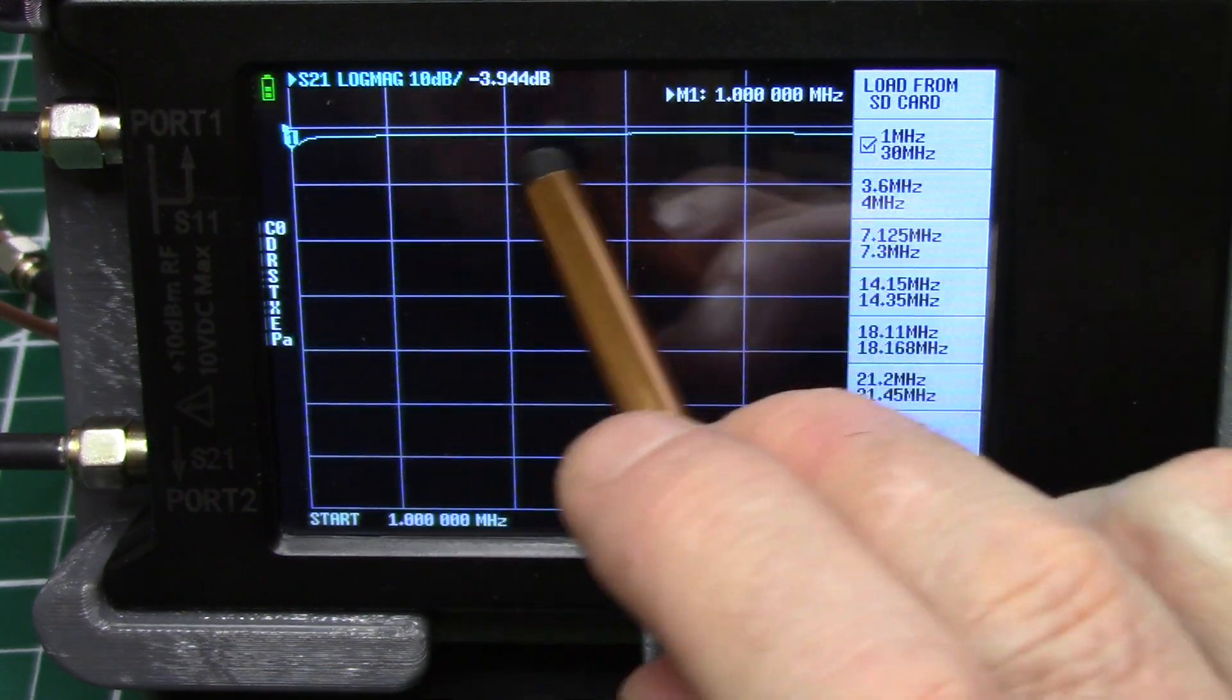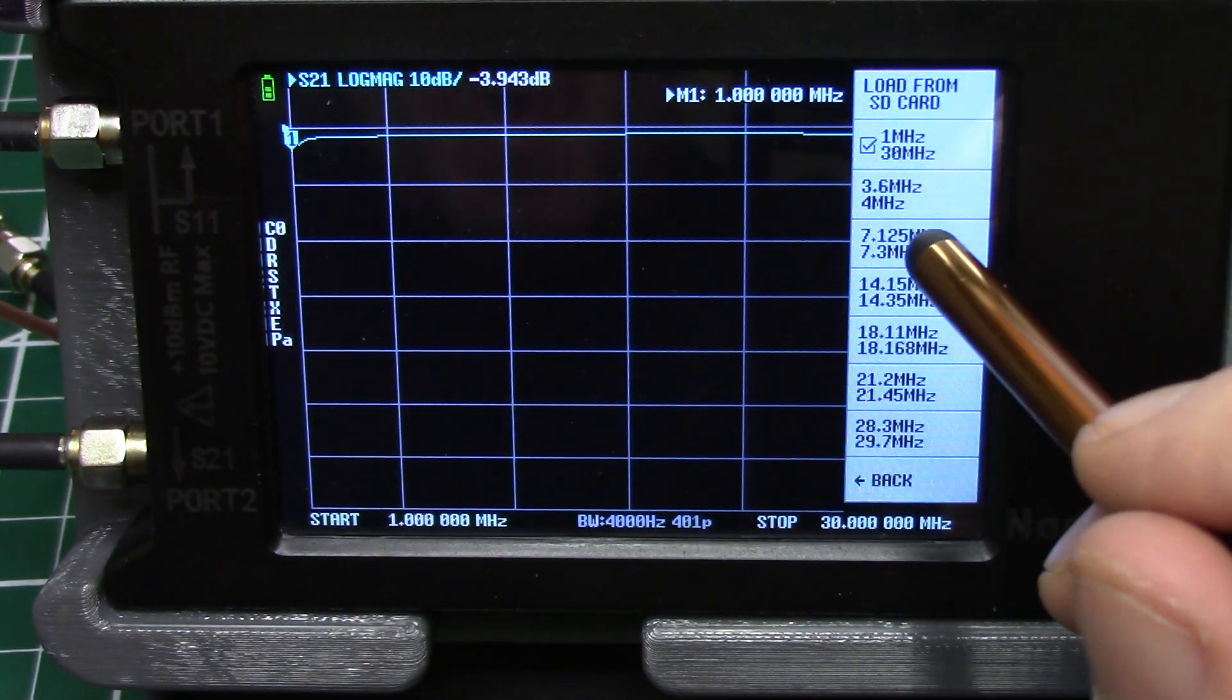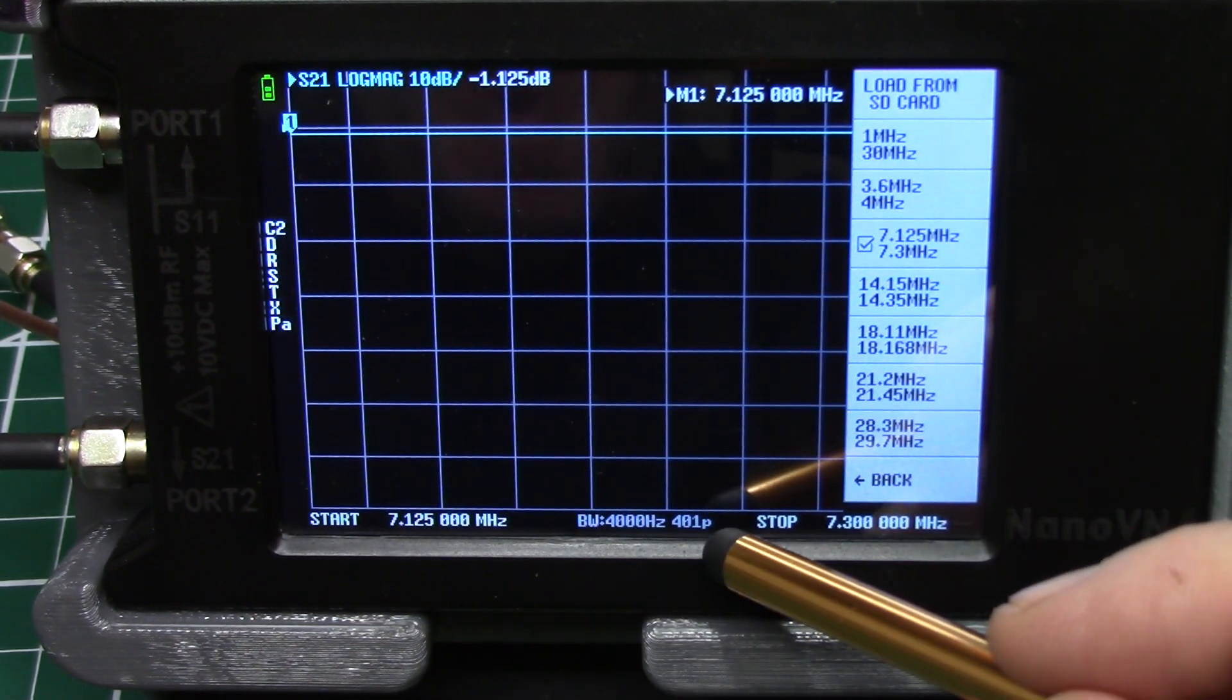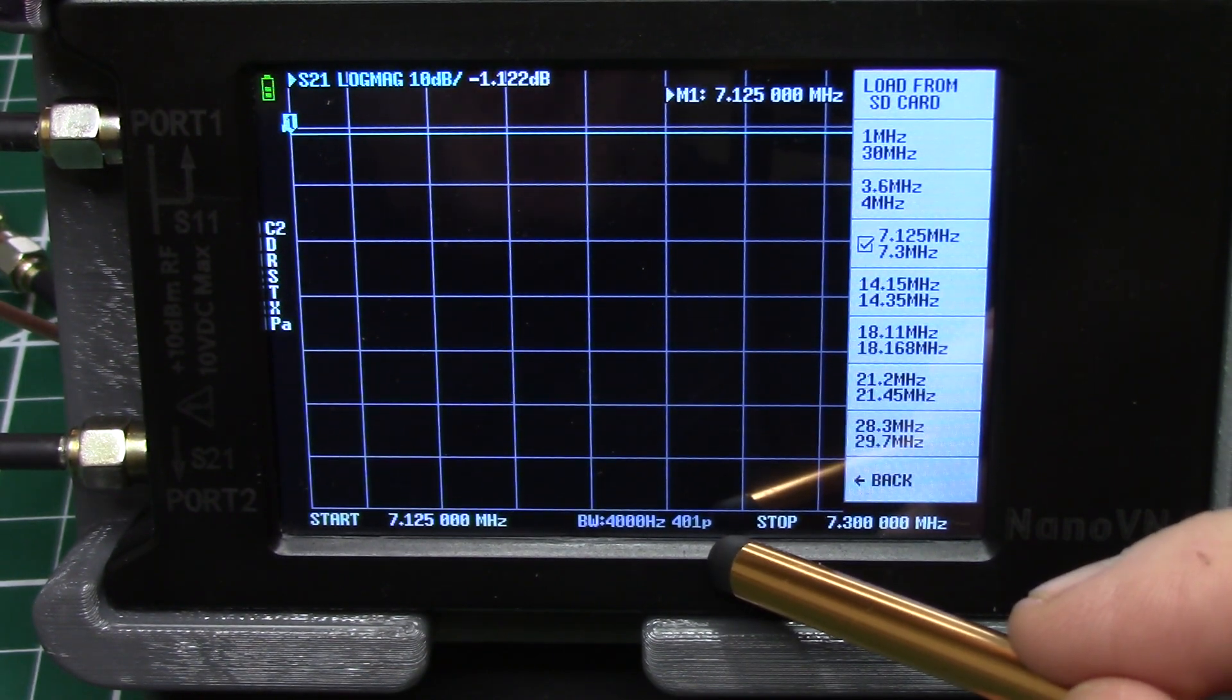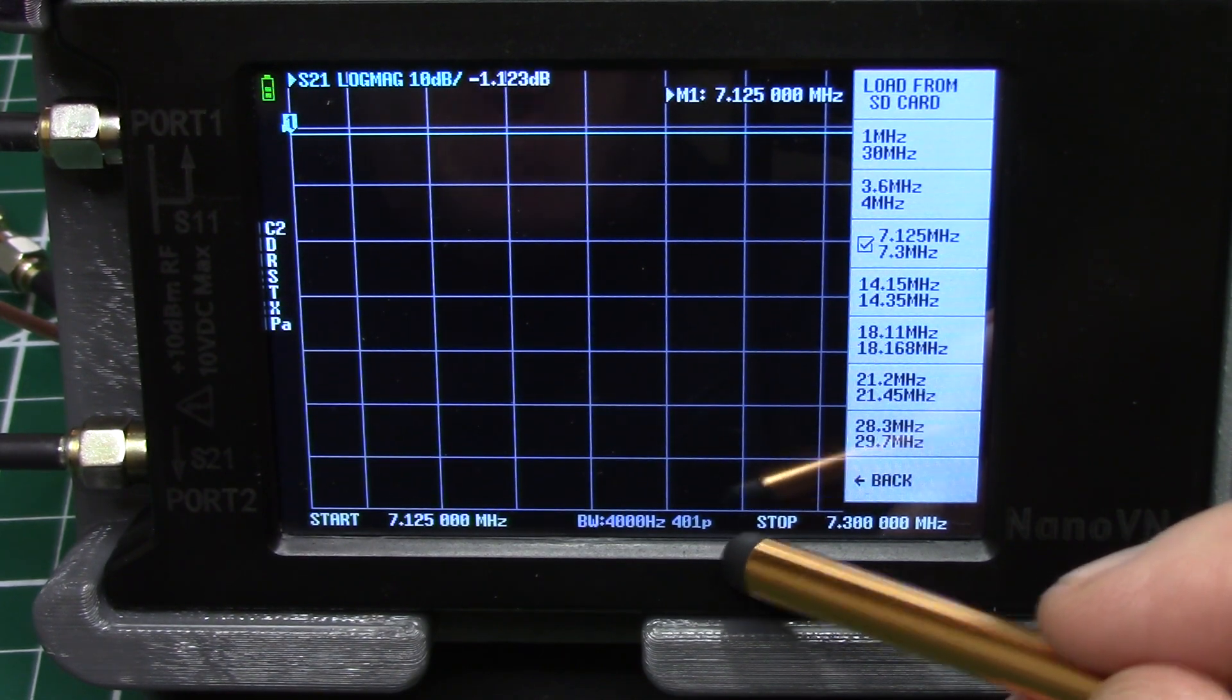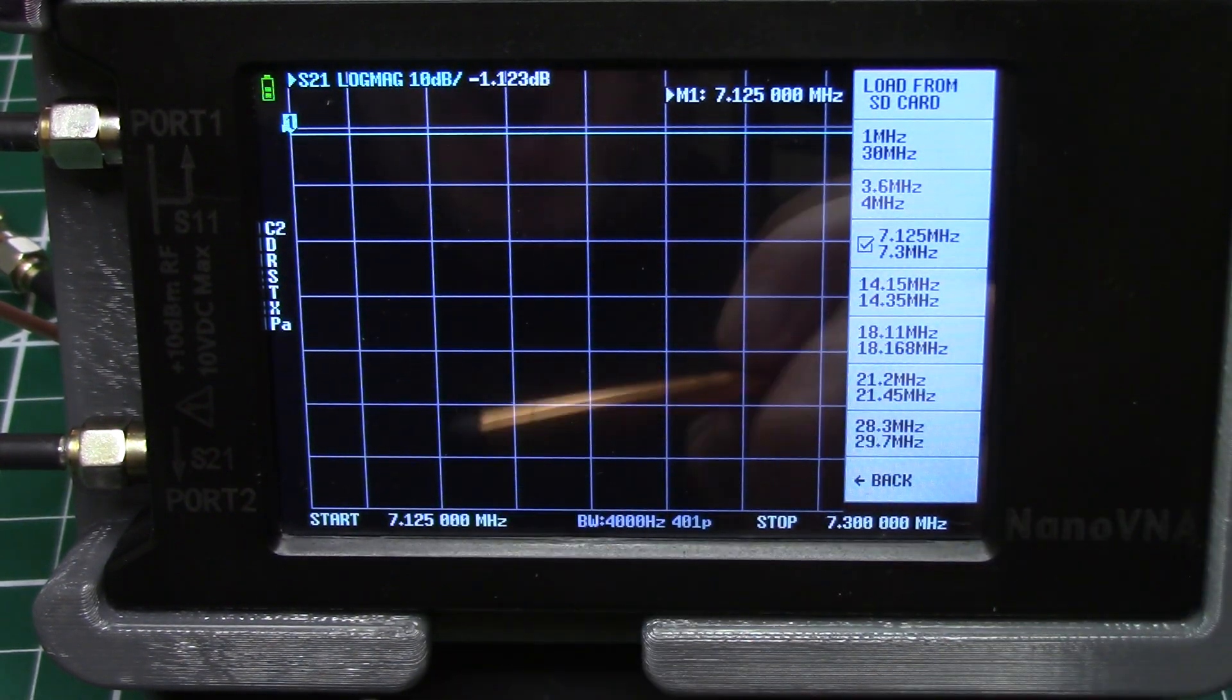Now this will get you good ballpark readings. But if you want to get the most precise readings you can, you need to program the individual bands and you need to program the 401 points that we went over in a previous video. You can go back and look at that video to see how to do that. This is just to show you how to go into log mag so you can do insertion losses.